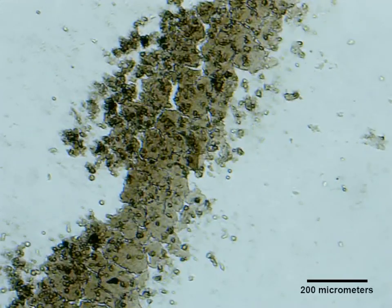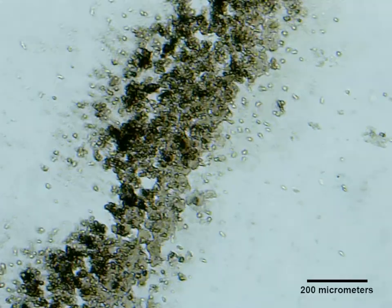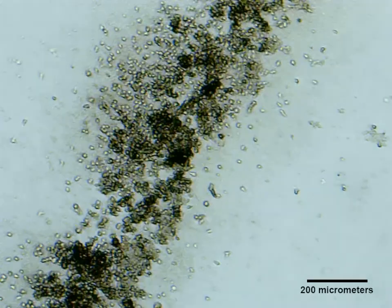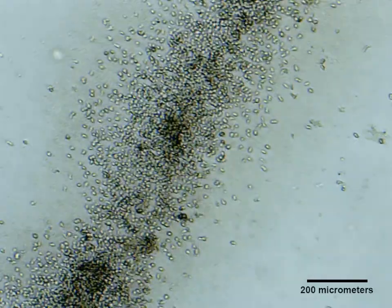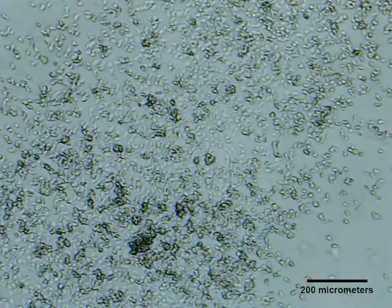Now we're seeing the biofilm being swarmed by amoeba. These amoeba are called dictees, and they live in the soil pretty much around the world. As the biofilm disintegrates, the amoeba multiply.